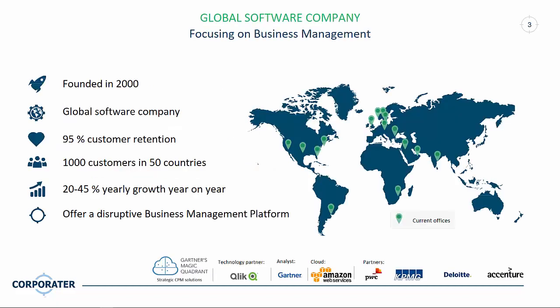Let's start by introducing Corporator. Corporator is a global software company spread all over the world with 18 locations. We have more than a thousand customers in 50 countries, and we offer what we call a disruptive business management platform that can give your BI and analytic investment much more value. We offer our solution as a cloud or on-premise solution, and in 2017 we entered Gartner's Magic Quadrant for Strategic Corporate Performance Management Suites.